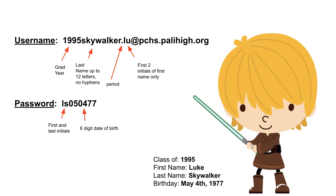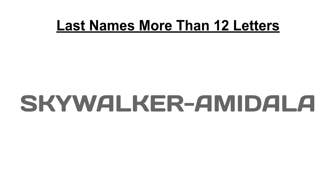In review: it's your grad year, followed by your last name up to 12 letters with no hyphens, then a period, then the first two letters of your first name, and then @pchs.palihigh.org — that's your username. Your default password, until you change it, is your first and last initials followed by a six-digit birth date.